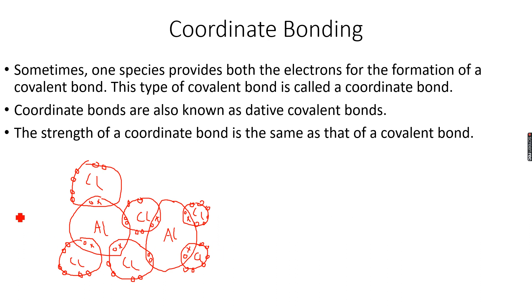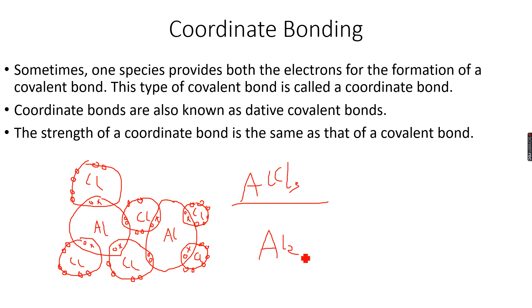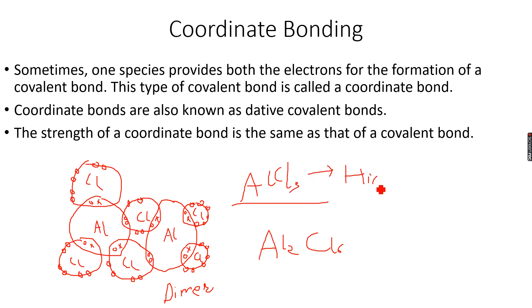When you give a lot of heat to this compound, these coordinate bonds break and AlCl3 is formed. So at high temperatures, aluminium chloride exists as AlCl3, and at low temperatures it exists as Al2Cl6. This Al2Cl6 is called a dimer — the prefix 'di' means two — so two molecules come together through coordinate bonding to form a dimer.